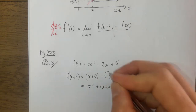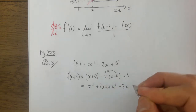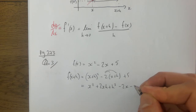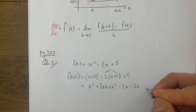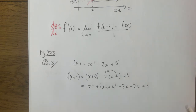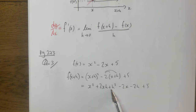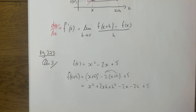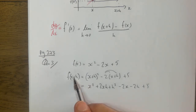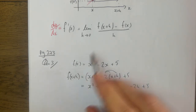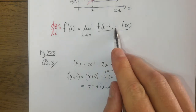Then minus two x minus two h plus five. Let's do a quick spot check to see if we can tidy that up - see if there are like terms. No, there are not. So now we're going to put this f of x plus h and f of x into the formula.